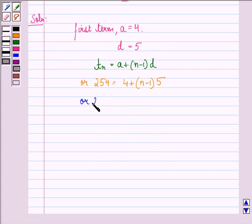Or, 254 minus 4 divided by 5 is equal to n minus 1. Or, 250 divided by 5 is equal to n minus 1.